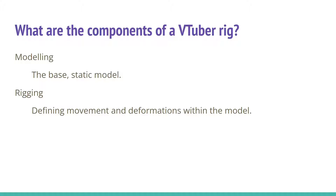What are the components of a VTuber rig? There are two main aspects to a full virtual avatar for both 2D and 3D: modeling and rigging. Modeling is the process of creating the base static model. Rigging is the process of setting up movement — defining how the model will deform when you move. In a media production line the rigger would hand off the fully rigged model to an animator, but in VTubing the animation comes from your tracking software.